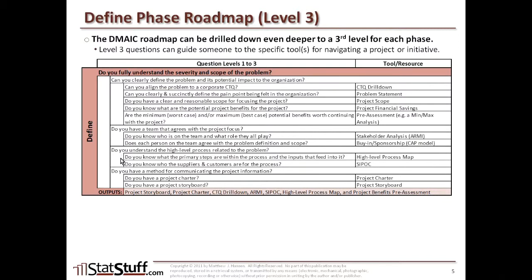Then you move on to the next questions. The third-layer question is: Do you know what the primary steps are within the process and the inputs that feed into it? A high-level process map is what might guide you with that. The next question is: Do you know who the suppliers and the customers are for the process? If you're not really sure, the SIPOC is what might help you in answering that. Once you've moved on, you can go to the last layer of questions.